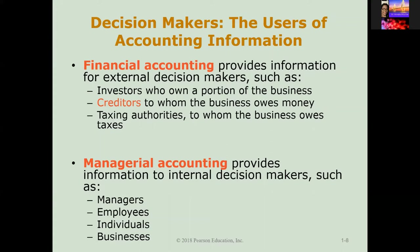Individuals use accounting information to make decisions such as how much money to save for college, or should I purchase a new computer. Business owners use accounting information to set goals, measure progress toward those goals, and make judgments or adjustments when needed. Outside investors have an ownership interest in the business and often provide money to get a business started. A creditor is any person or business to whom the business owes money, such as taxing authorities, who collect taxes levied on a business's income or assets.